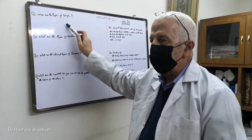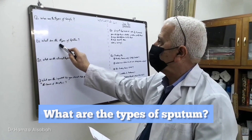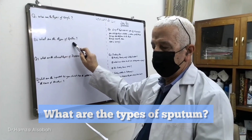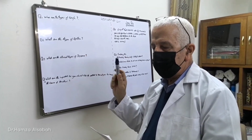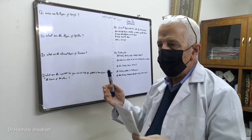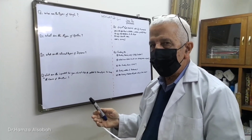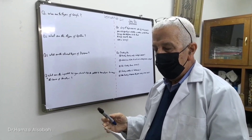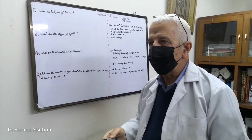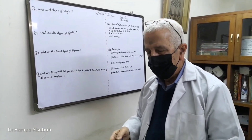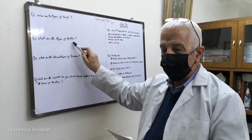Cough on talking is due to laryngeal causes. The second question: what are the types of sputum? The first type is a large amount of sputum that the patient is expectorating. This is due to bronchiectasis, lung abscess, pneumonia, and some cancers. The cancer that produces large amounts of sputum is alveolar cell carcinoma, a type of adenocarcinoma.